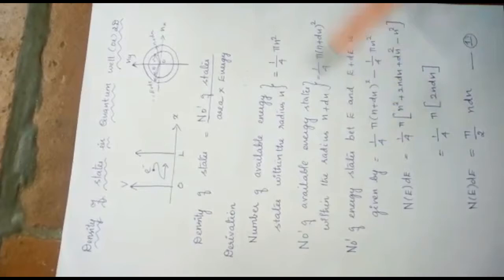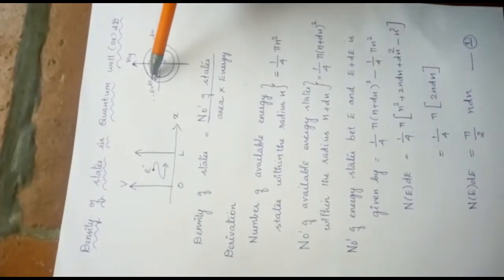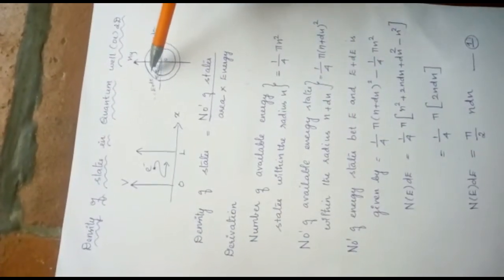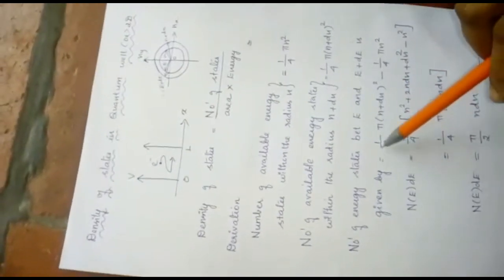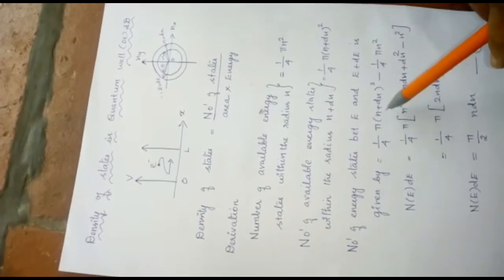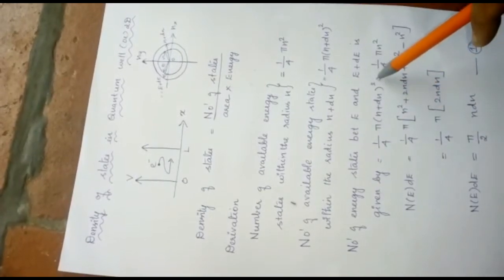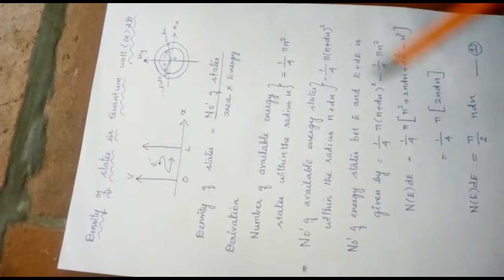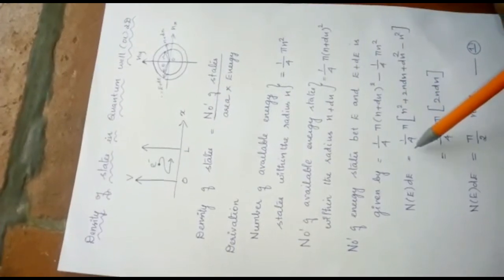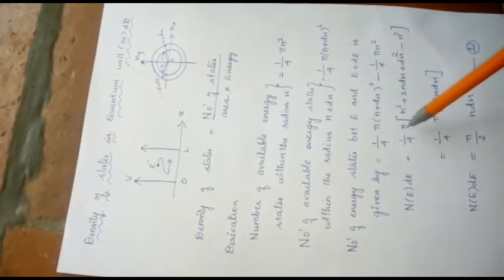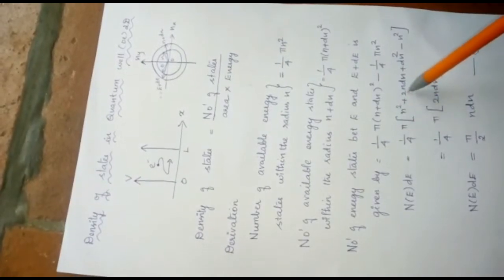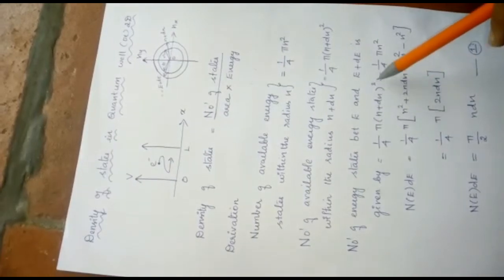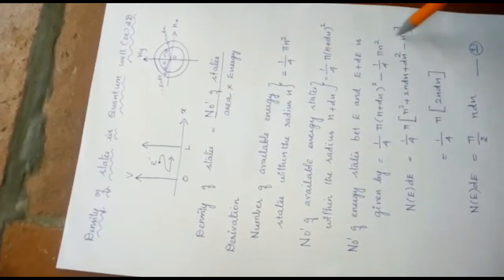Then, the number of energy states between E and E plus dE. That means, how many energy levels are present in between this and this line. That is given by 1 by 4 pi n plus dn, the whole square minus 1 by 4 pi n square. Then the next line becomes 1 by 4 pi. So, the bracket n square plus 2n dn, we are expanding this a plus b, the whole square form, minus this.